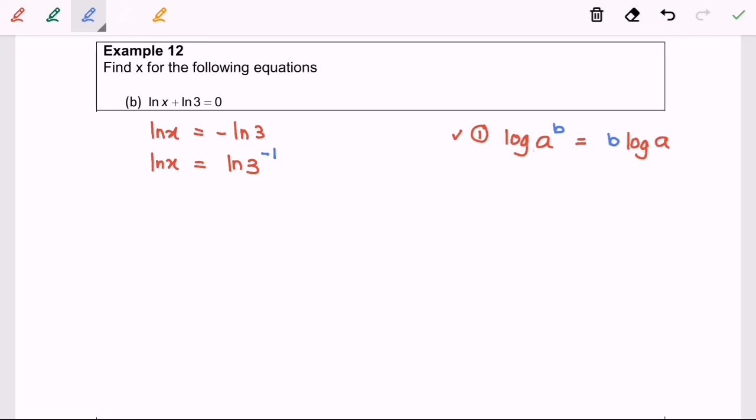So what I'm going to do is compare. Then we will have our answer: x is equal to 3 to the power of negative 1, where x equals 1 over 3. So here we are, and thanks for watching.